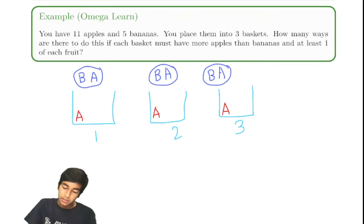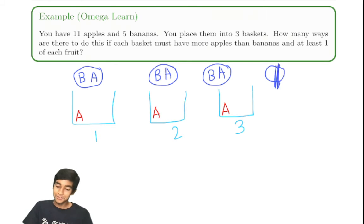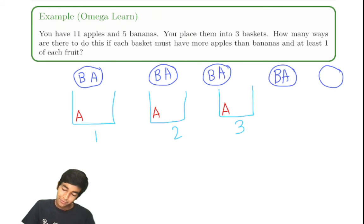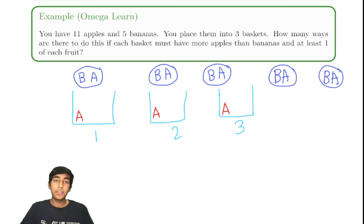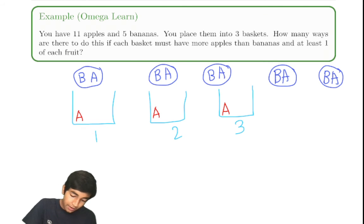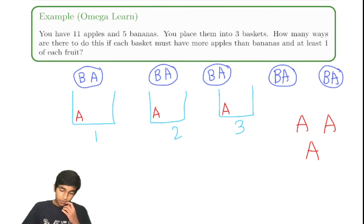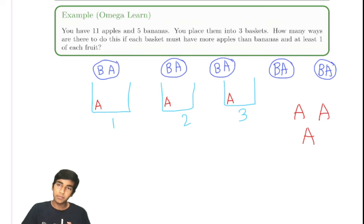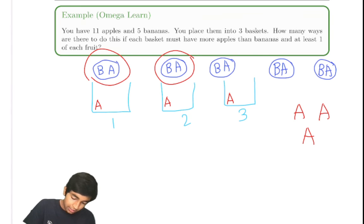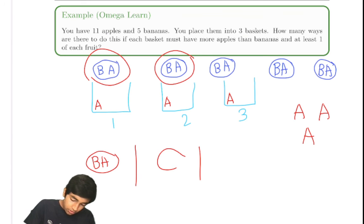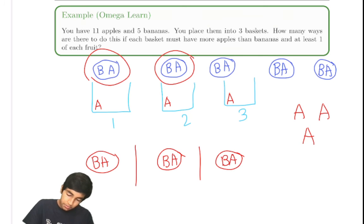So it's like adding banana-apple groups — let's call them banapples. We've invented a new fruit: the banapple. We have five banapples — banana and apple pairs — that must go into the three baskets. After placing the five banapples and the three required starting apples, we have three extra apples left to distribute.